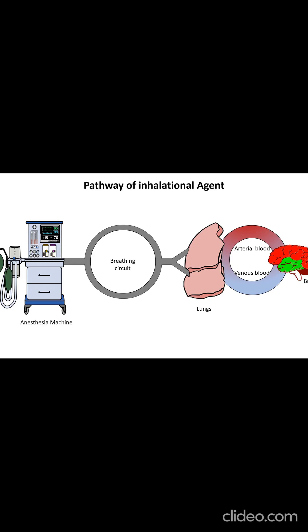The movement of an inhalational anesthetic from the anesthesia vaporizer to the brain begins with the delivery of an inhalational agent, which is mixed with oxygen, nitrous oxide, or air in a controlled concentration. This mixture, called fresh gas, flows through the breathing circuit and reaches the patient's lungs during inhalation. The concentration of an inhalational anesthetic in the gas mixture delivered to the lung is the inspired gas concentration. Once in the lungs, the anesthetic enters the alveoli.